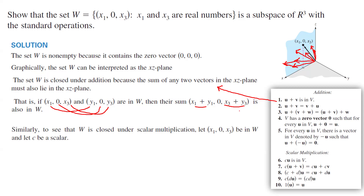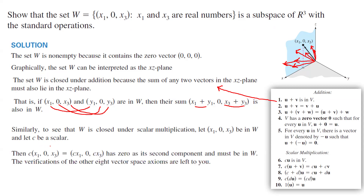This set is closed under scalar multiplication as well. If I take a vector (x₁, 0, x₃) and multiply by scalar c, I distribute c over each entry, getting (cx₁, c·0, cx₃) = (cx₁, 0, cx₃). It has 0 in the second component and follows the same format as elements in W: cx₁ and cx₃ are real numbers and the middle entry is 0.